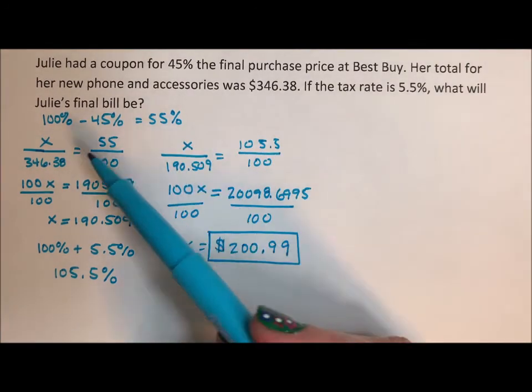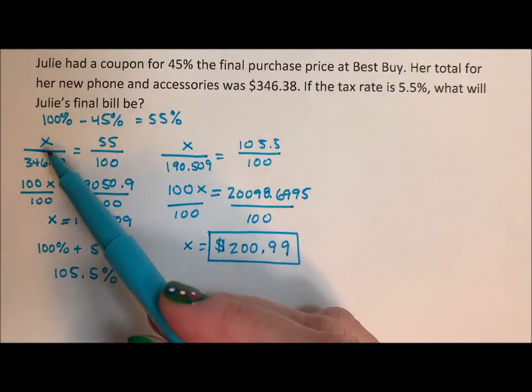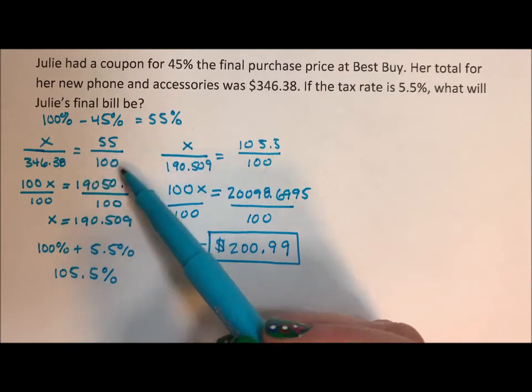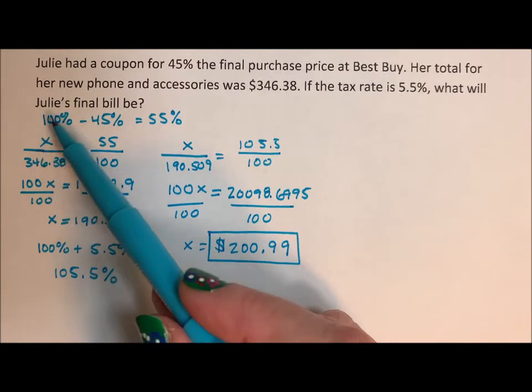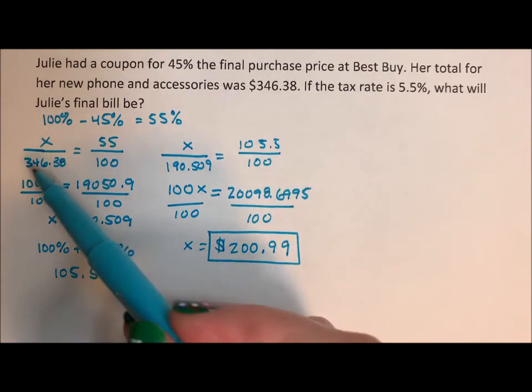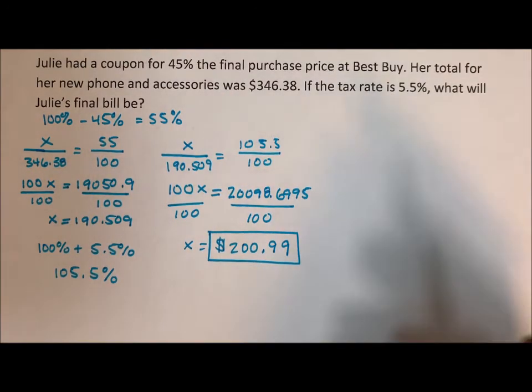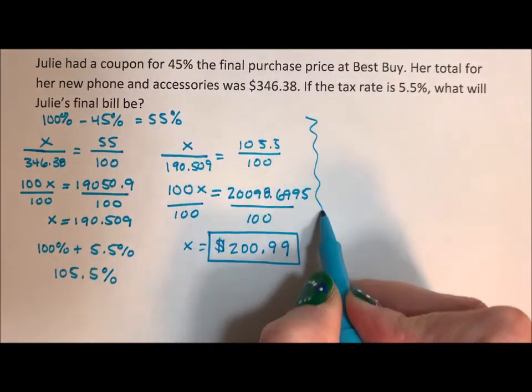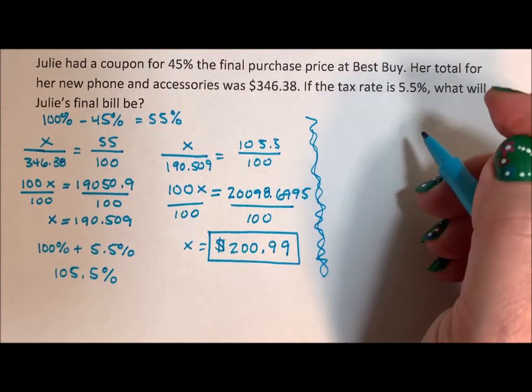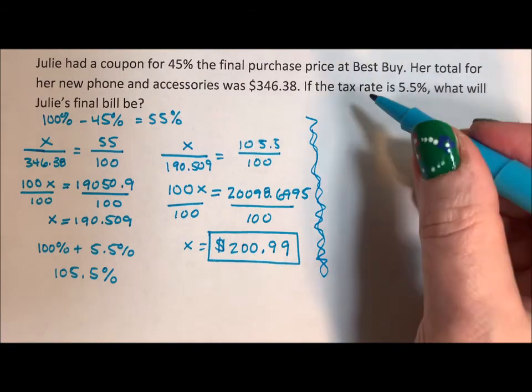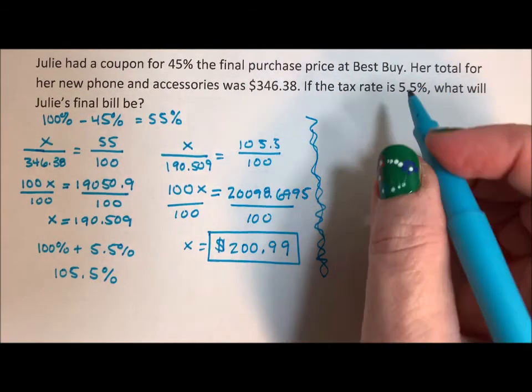So this is a really common way setting up these proportions with percent over 100, is over of, or part over of, with your total lining up with 100%. Once you get used to percents, and once you get into exponentials, kind of a nicer way of doing it a little bit faster.